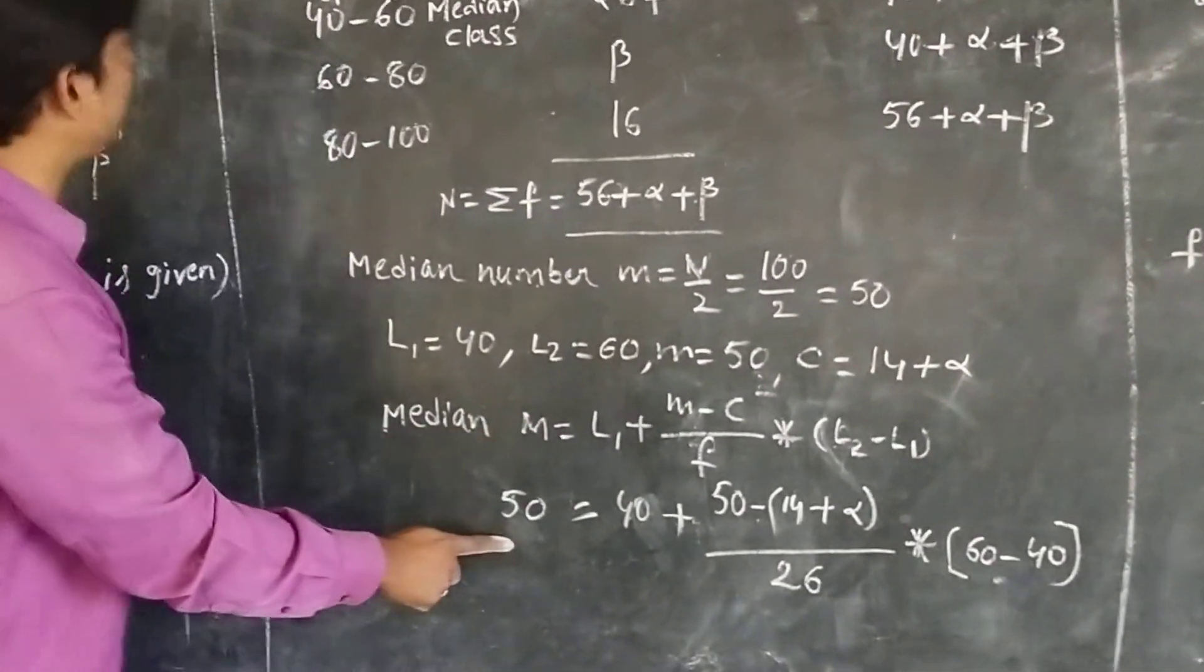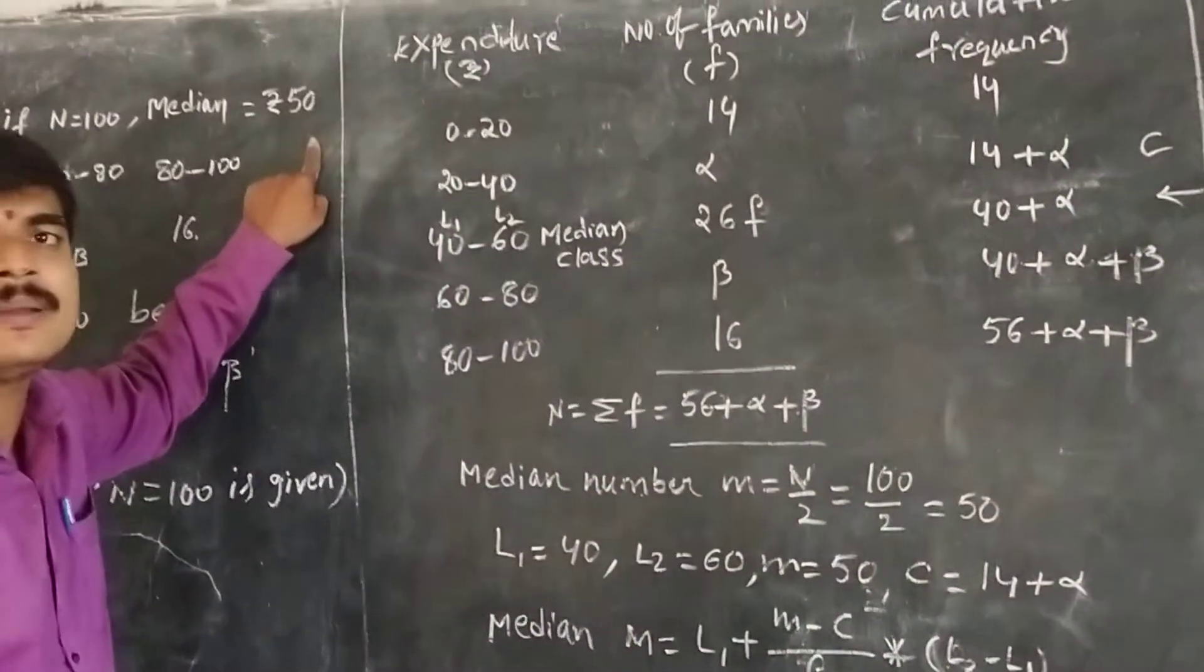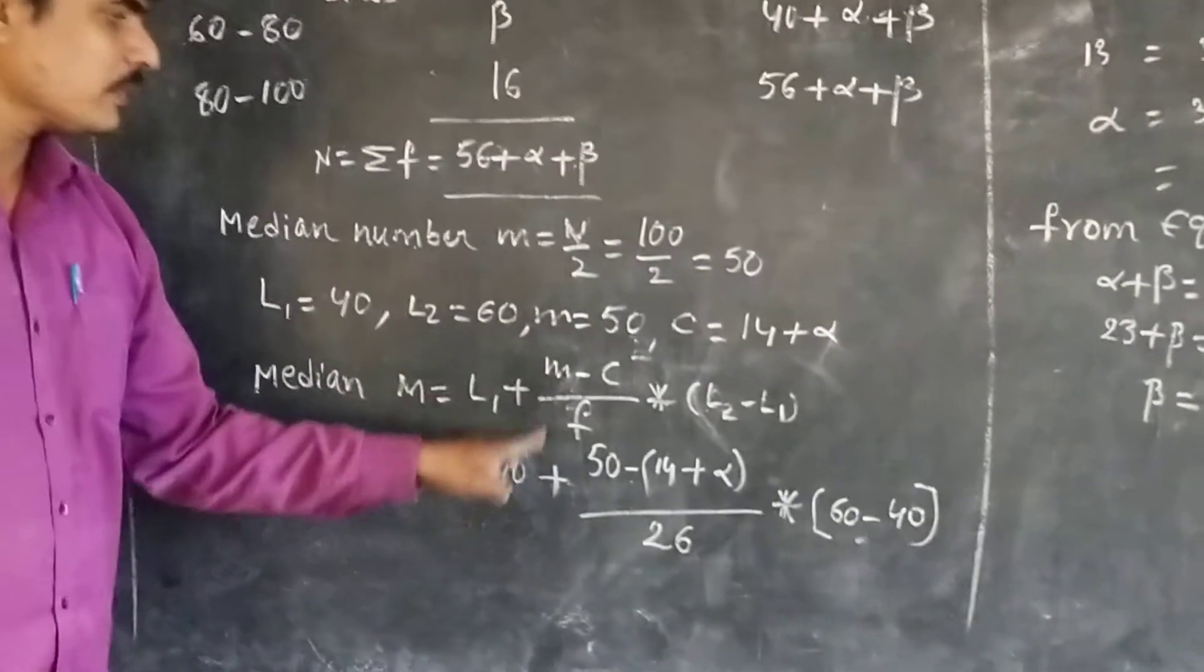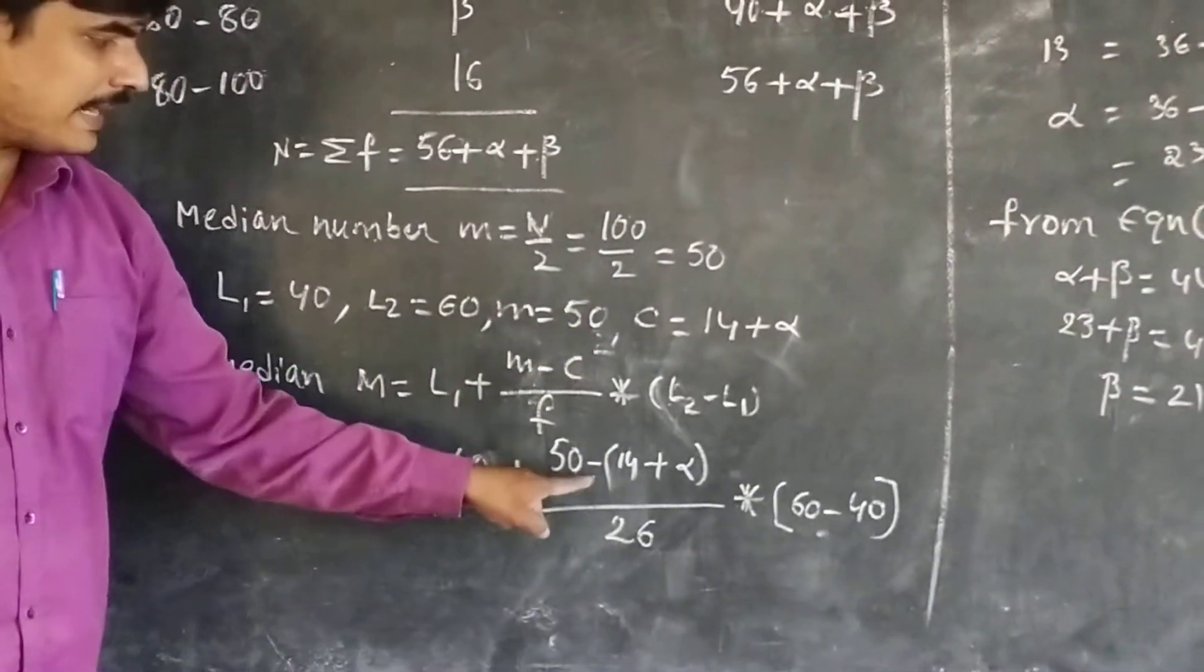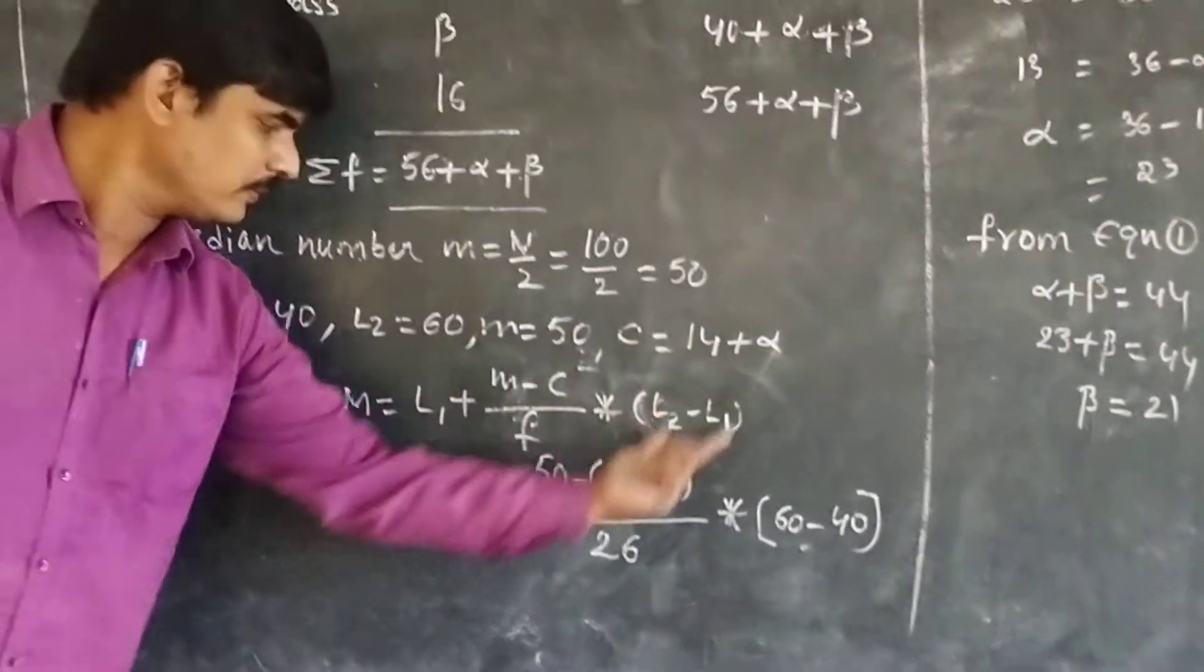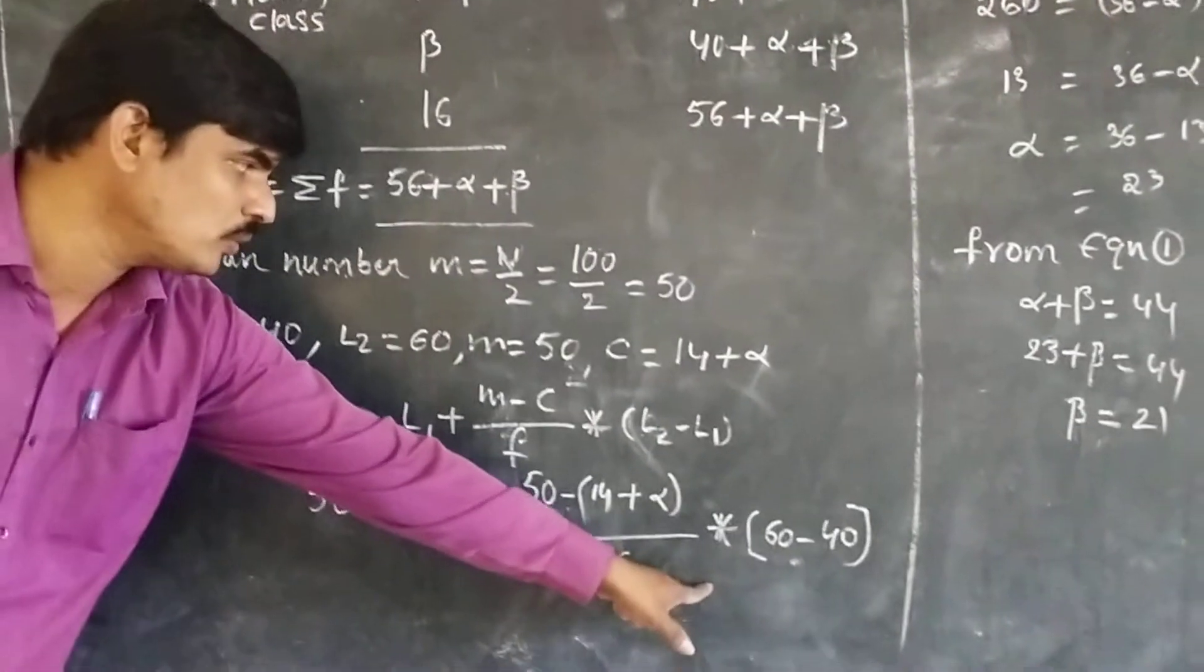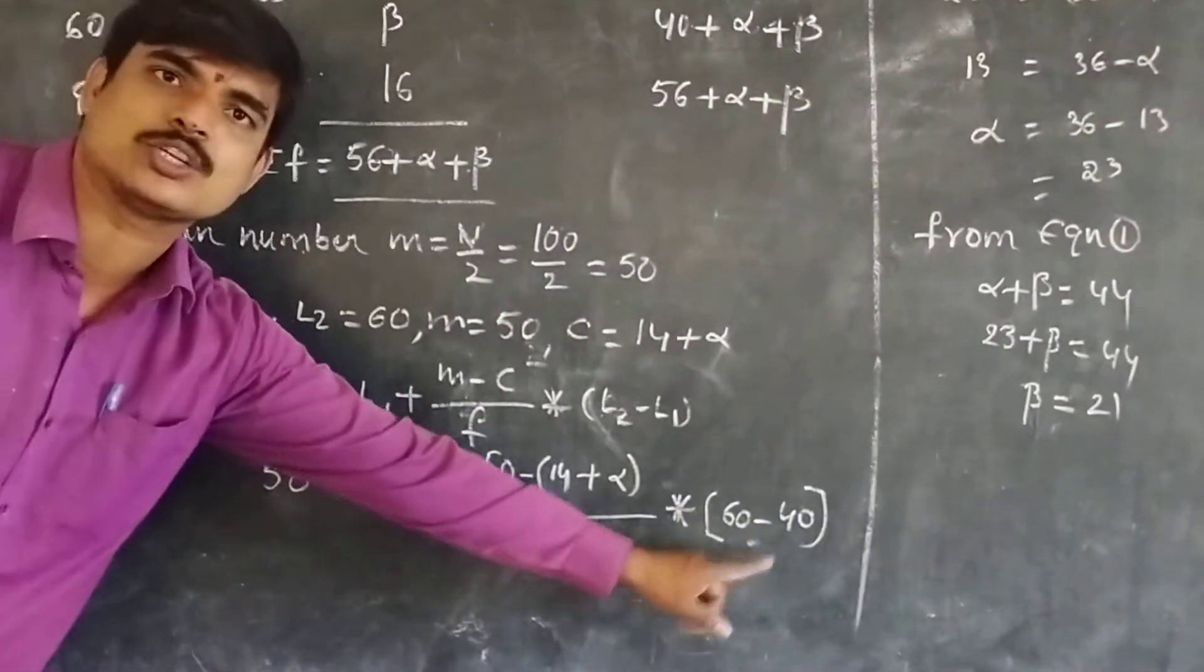M equals 50, which equals L1 equals 60, M value 50 minus C value 14 plus alpha, divided by frequency value 26, into class interval 20. We are getting the value alpha equals 23.